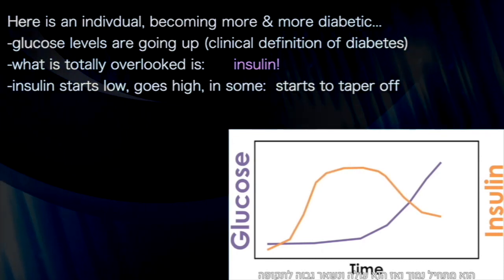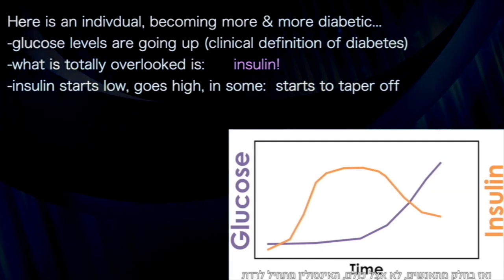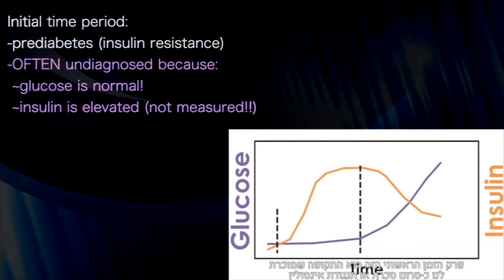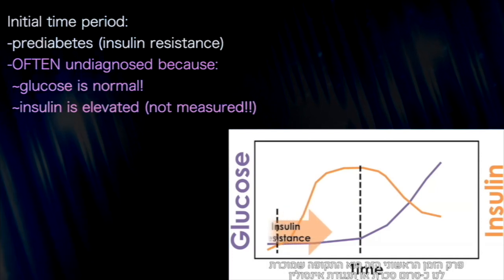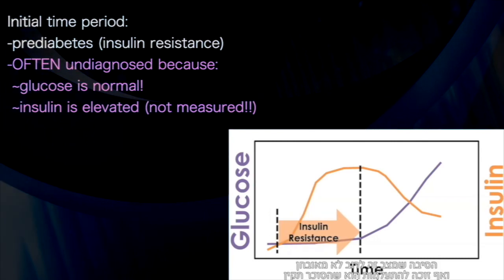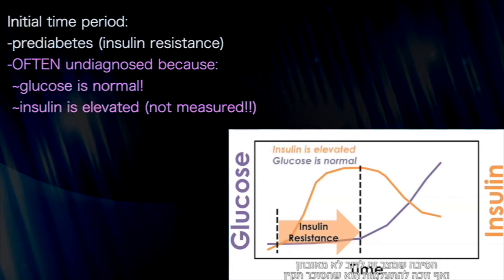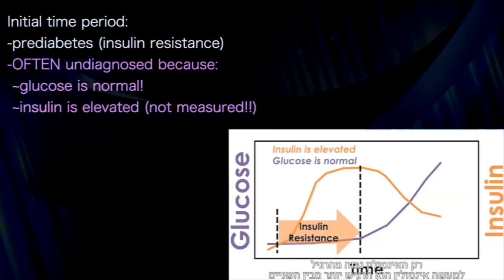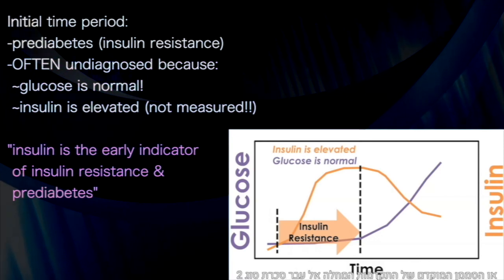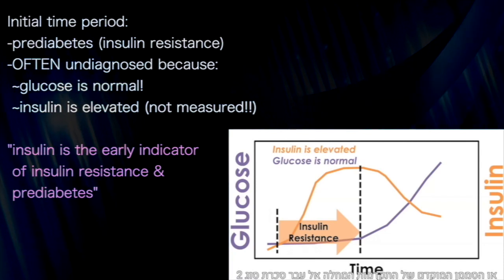Insulin is high for a while, and in some individuals it starts to taper off. There are two time points worth highlighting. This initial period is known as prediabetes or insulin resistance. Why this state is so often undiagnosed is because glucose is normal in the state of insulin resistance and insulin is elevated. Insulin is the more sensitive, early indicator of progression on this pathway towards type 2 diabetes.